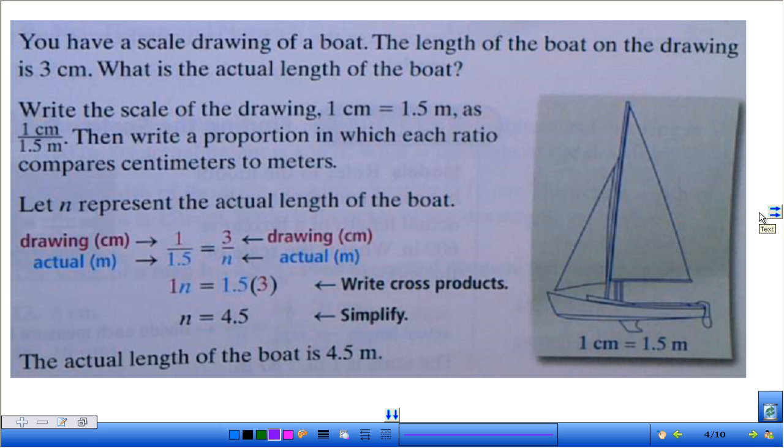All right, here's an example. Don't worry about writing this one down. I'm just going to walk you through an example. So this is one that I pulled from a book. It says you have a scale drawing of a boat. So here's your scale drawing. The length of the boat on the drawing is 3 centimeters. So this is telling us that from here to here is 3 centimeters. And then I want to know the actual length of the boat. So they gave me a scale here, and we need to set up a proportion. So over here, they set up their proportion, and they used N to represent the actual length. We usually use X. But the same thing when setting up a proportion.